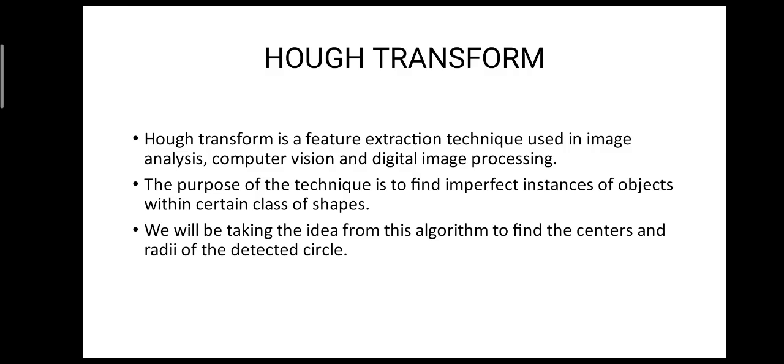Here we are using Hough Transform. Hough Transform is a feature extraction technique used in image analysis, computer vision and digital image processing. The purpose of the technique is to find imperfect instances of objects within certain classes of shapes. We will be taking the idea from this algorithm to find the centers and radii of the detected circles.